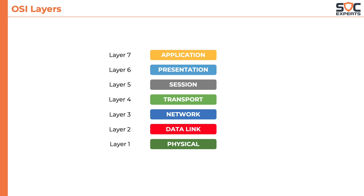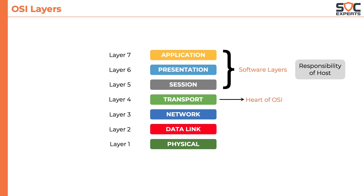The top layers are sometimes referred to as software layers, and the functions of these layers are usually handled by the host or a computer. The transport layer is considered the heart of OSI. The lower three layers are called hardware layers, and their functions are delivered by network devices like routers, switches, and cables.